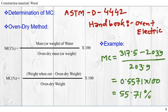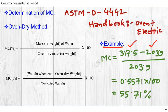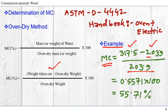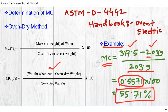Now we're going to do a simple example of finding moisture content. Given: the green wood weight is 317.5 grams and the oven dry weight is 203.9 grams. So what is our moisture content? Using the equation: (317.5 − 203.9) divided by 203.9, multiplied by 100. We get 0.5571 multiplied by 100, which gives a moisture content of 55.71%. That will be our answer.